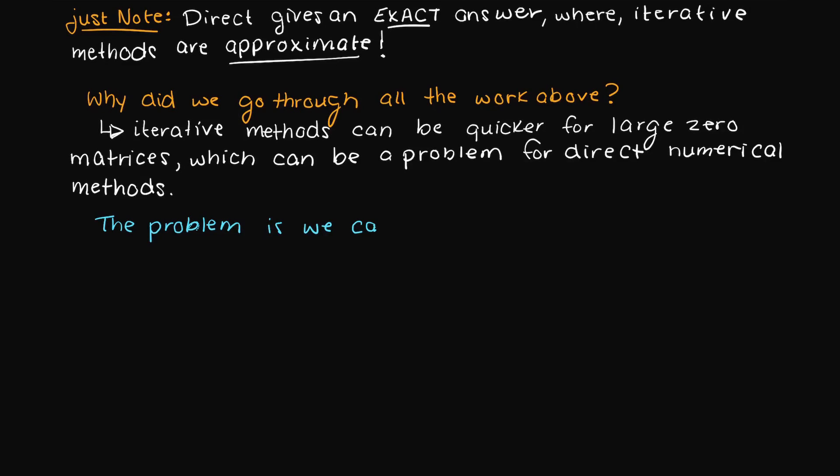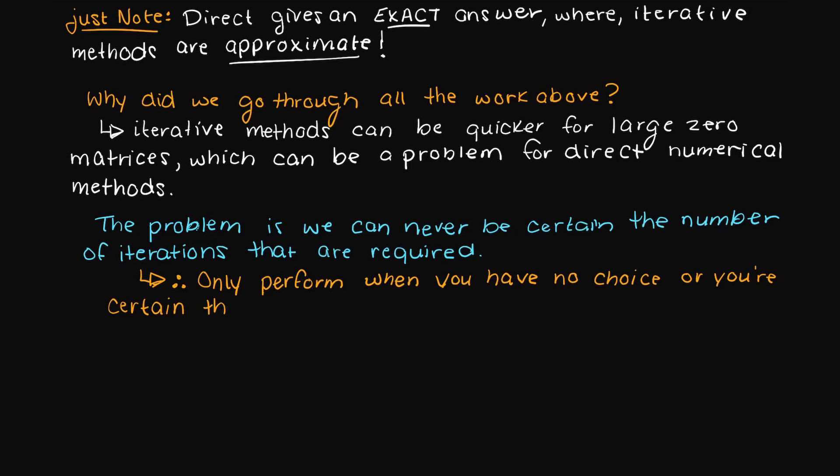The only drawback to iterative methods is that we can never be certain how many iterations are directly required. Therefore, they should only be performed when you are certain that a result can be achieved, so pretty much making sure that the matrix does have a unique solution.